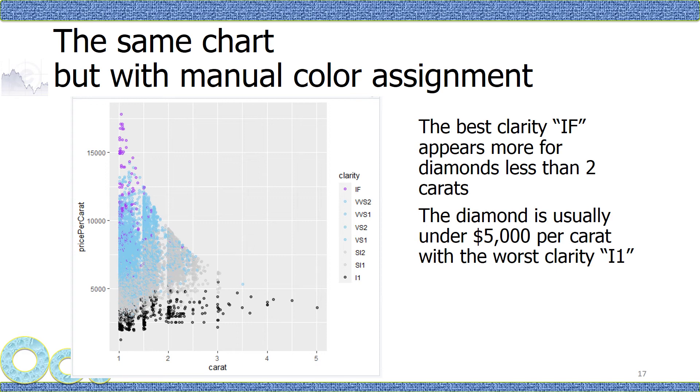But you can make it more illustrative when you use manual color assignment. The code is in the notes page. In fact, all the codes are in the notes page. So when you see this, it's quite clear that the purple color is the best clarity and the black one is the worst clarity.